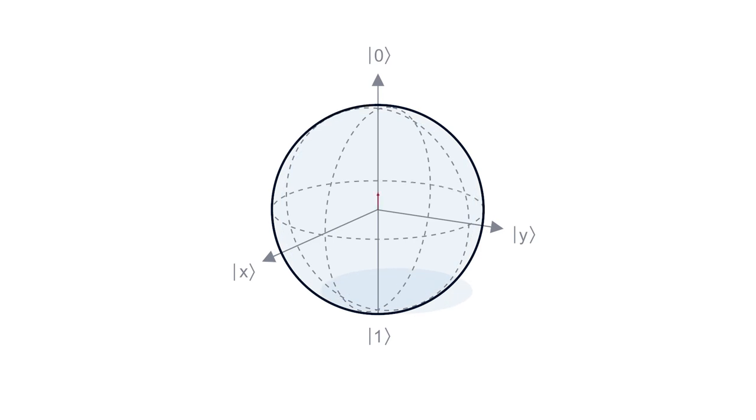Another gate that is often used in quantum information is the Hadamard gate. On the Bloch Sphere, the Hadamard gate is a pi-rotation around an axis right in between the x-axis and the z-axis. It brings the 0 state to the maximal superposition state plus, and it brings the 1 state to the minus state.